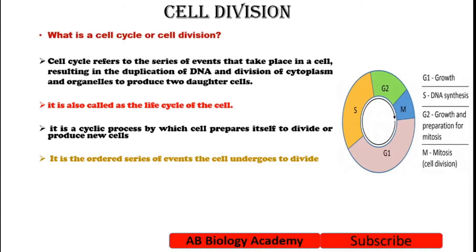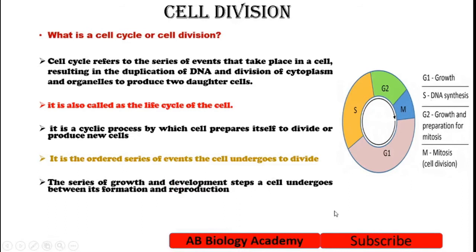It's an ordered series of events the cell undergoes to divide. Various things happen throughout the cell cycle, which we'll talk about in later lectures. The development steps a cell undergoes between its formation and reproduction.